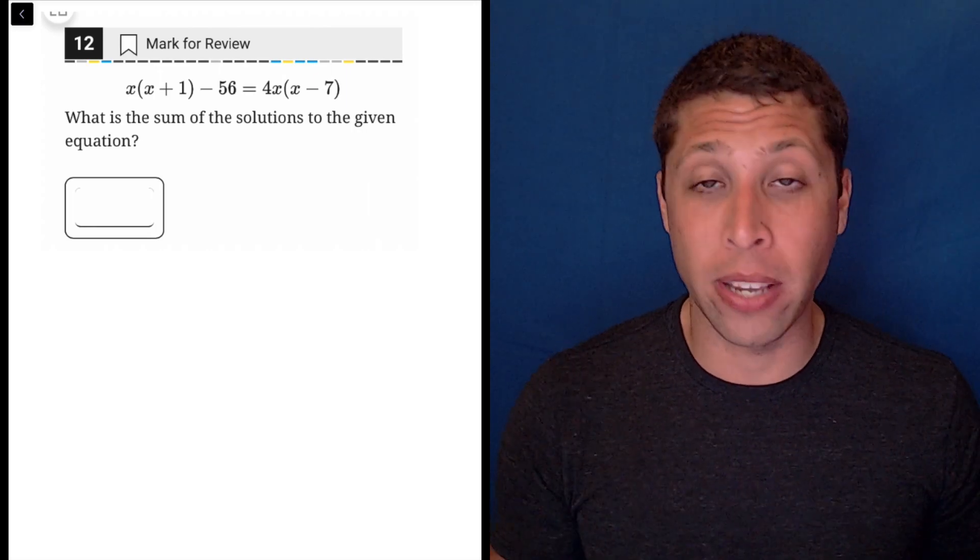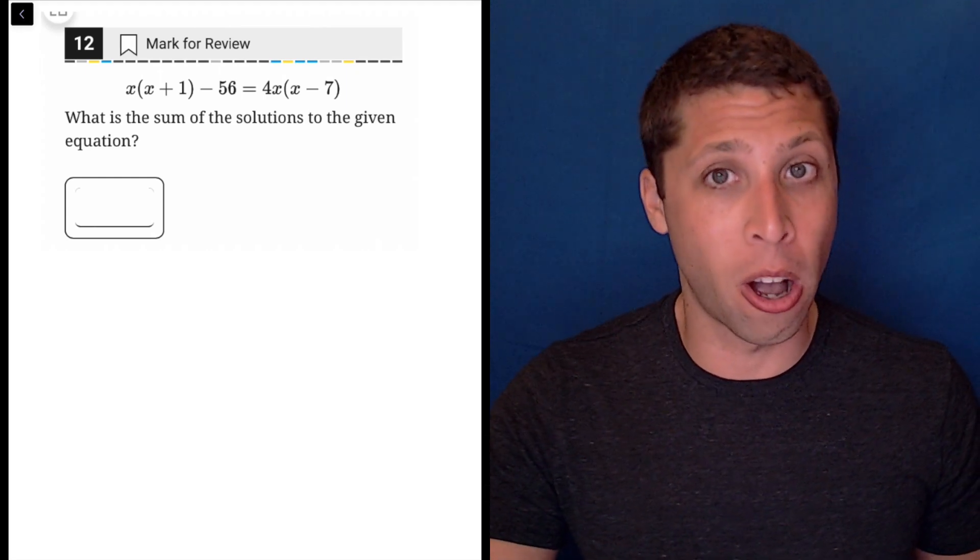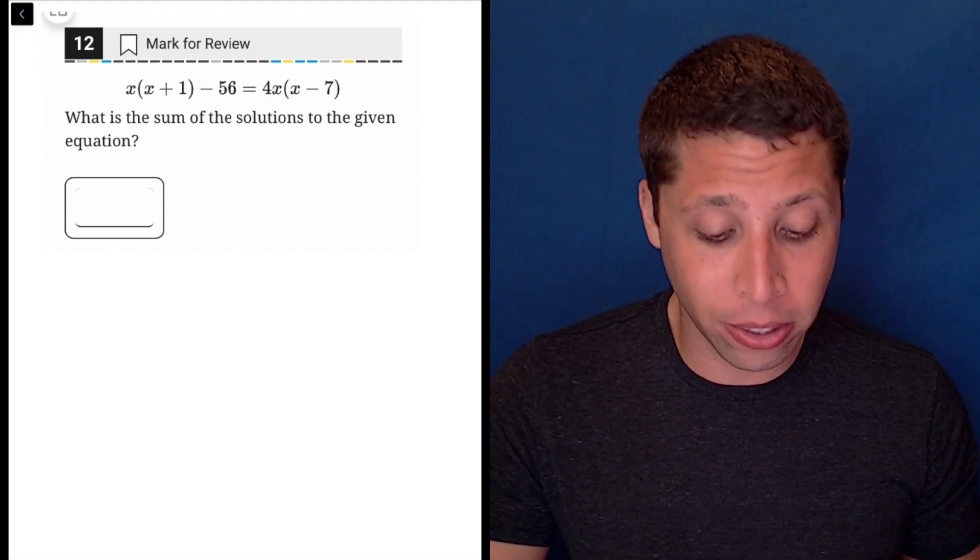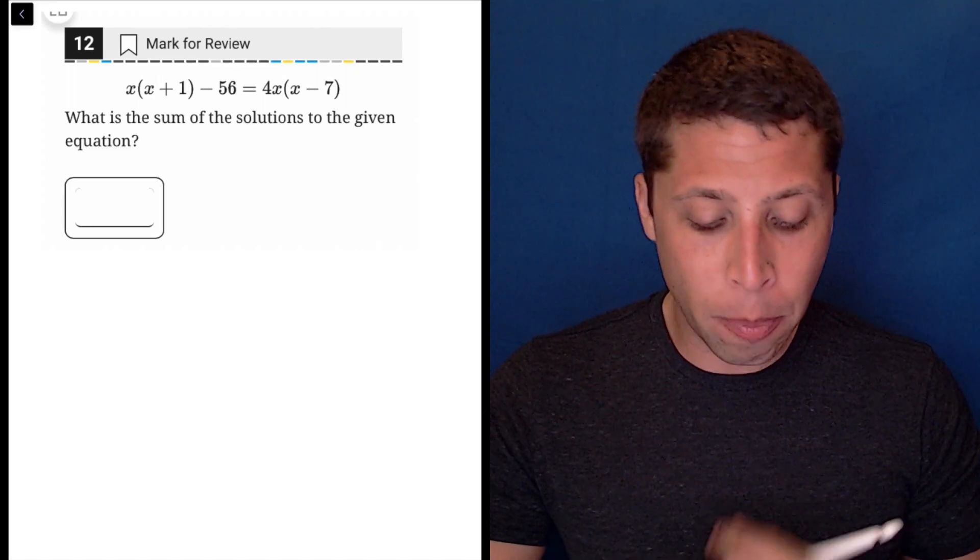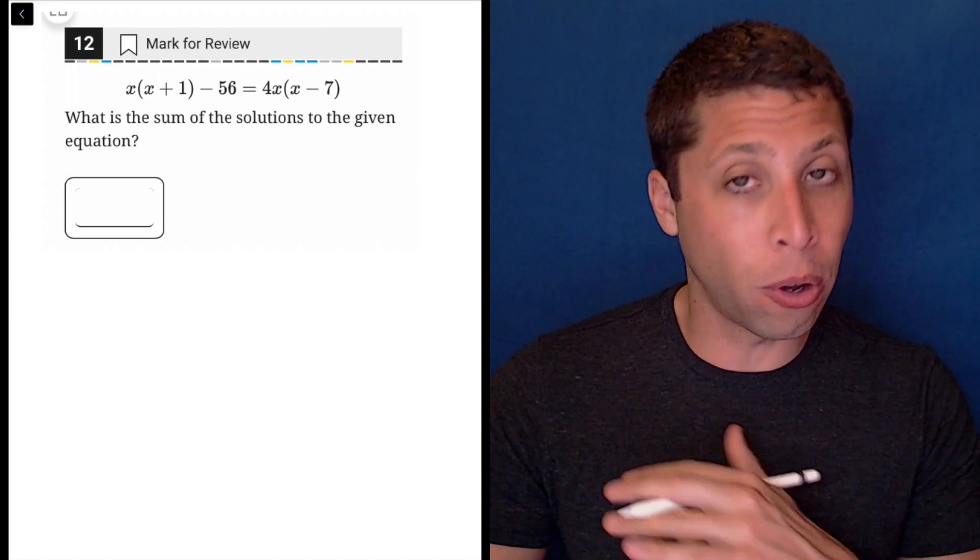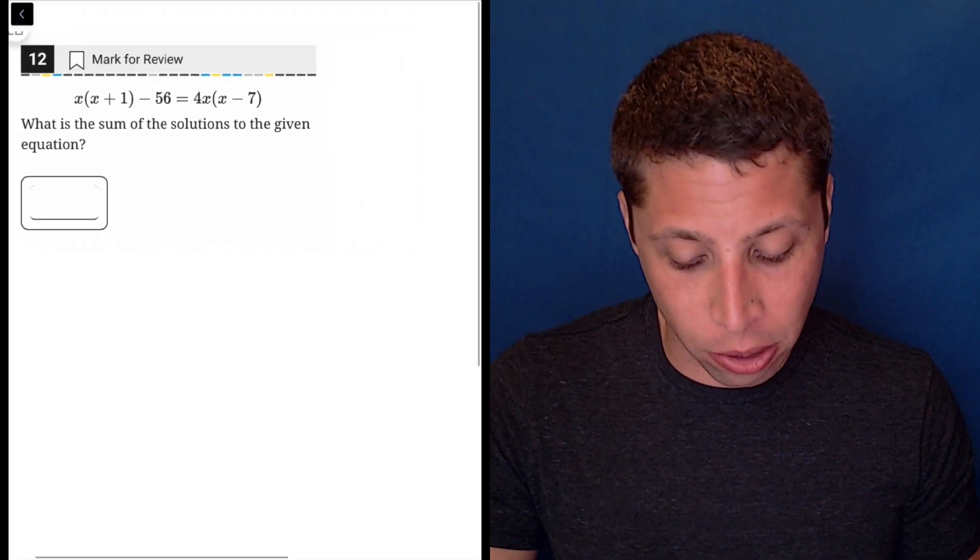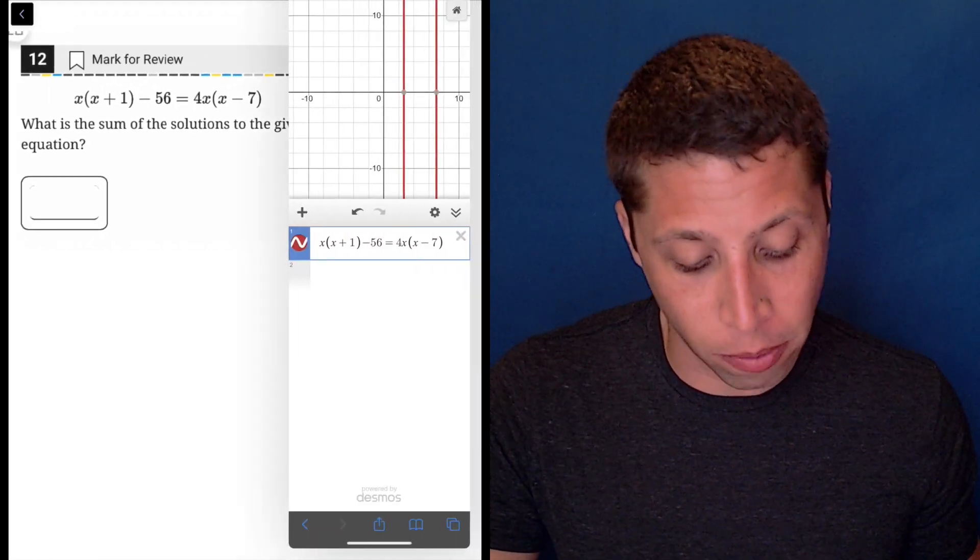So now that we have a graphing calculator for every question on the section, what I would do is just enter this into my graphing calculator and see what happens. Now because it's just one equation with only x's, it's going to look weird when we graph it. So I took the time to enter it already for you.